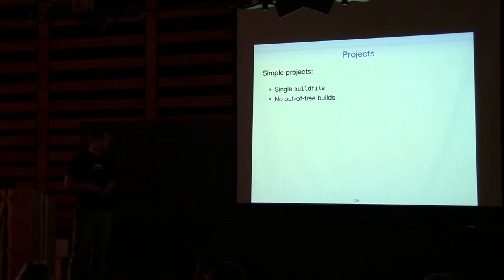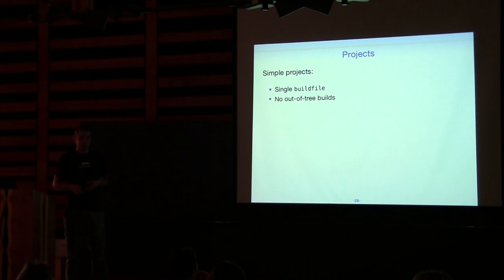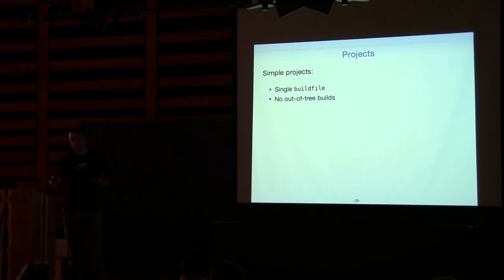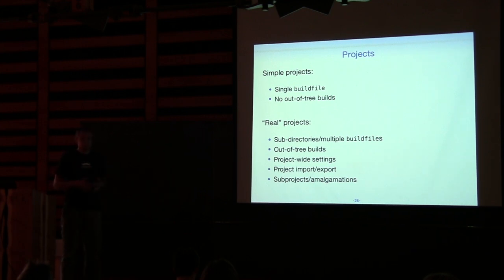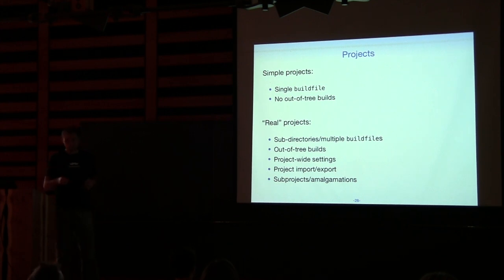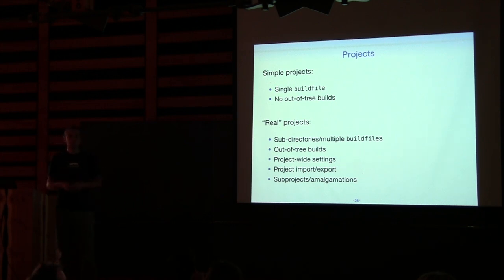Before we talk about configurations, let's talk about projects. In build2 there's an explicit notion of a project and there are two kinds. One is a simple project — what we've been using — with a single build file, usually one directory, but no out-of-tree builds. Then there are real projects, which support multiple directories, multiple build files, out-of-tree builds, project-wide settings, support for project dependencies (import/export), and sub-projects and amalgamation.